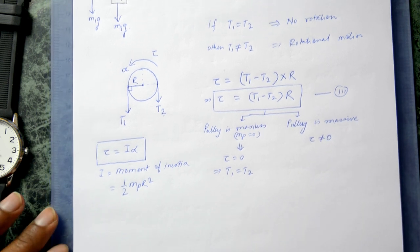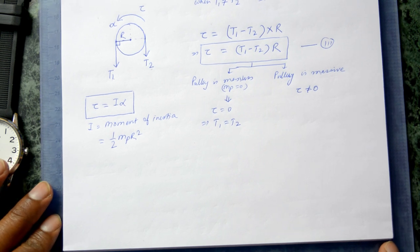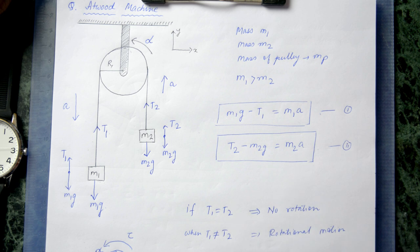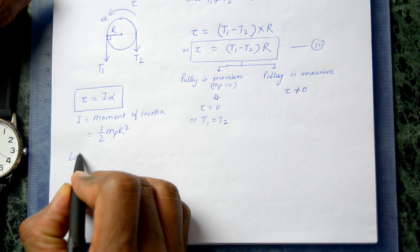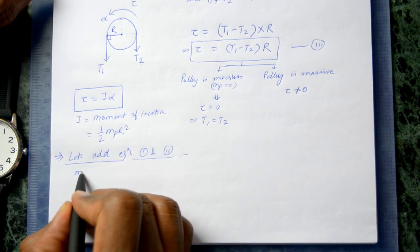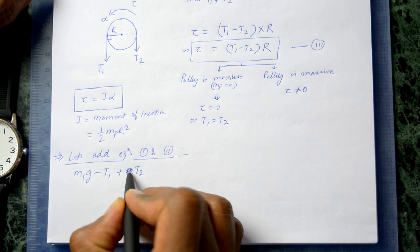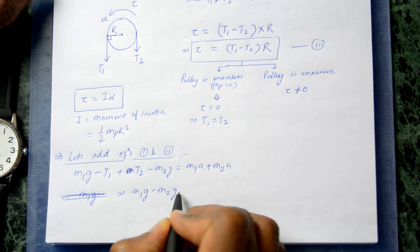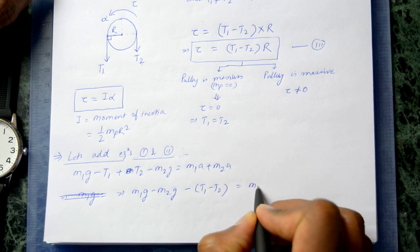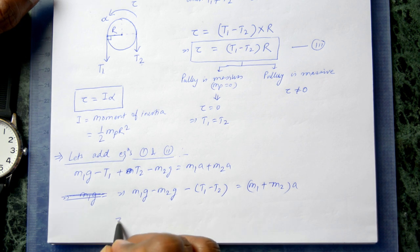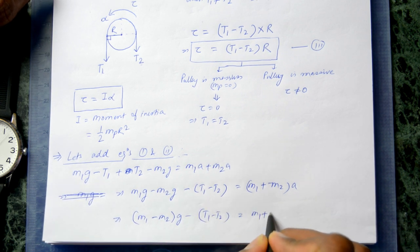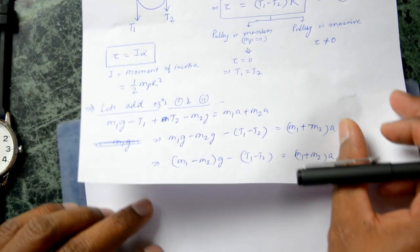The next step is to add equations one and two: (m1g − t1) + (t2 − m2g) = m1a + m2a, which simplifies to m1g − m2g − (t1 − t2) = (m1 + m2)a.